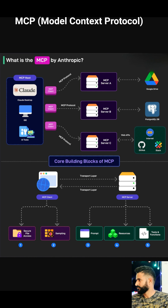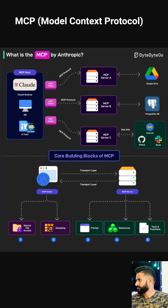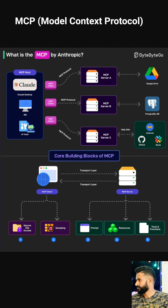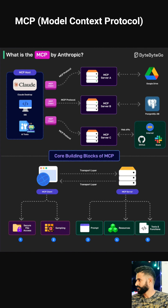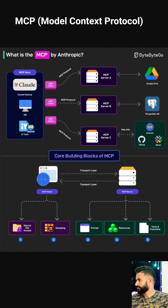Let's unlock the secrets of Anthropic's MCP, Model Context Protocol. Imagine you have an AI, like Claude, that's incredibly smart — but it's stuck in a box. It can't access your files, search the web, or use other tools on your computer. That's where MCP comes in. Think of it as a key that unlocks Claude's potential, allowing it to interact with the real world.